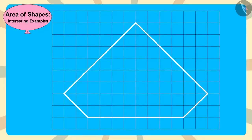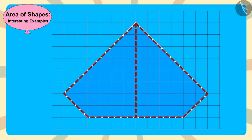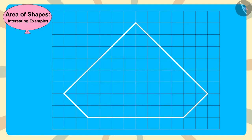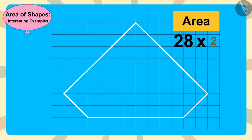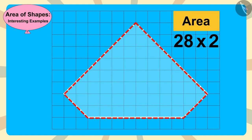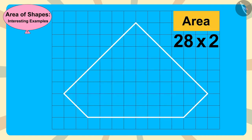Now, because the diamond is made of two equal parts, she multiplied the area of this part, 28, by 2. The area of this diamond is 28 times 2, which equals 56 square centimeters.